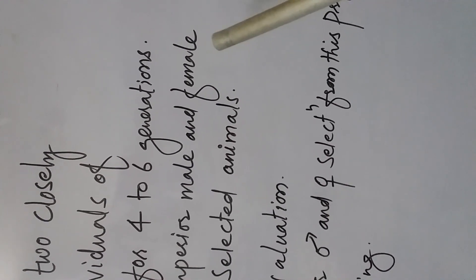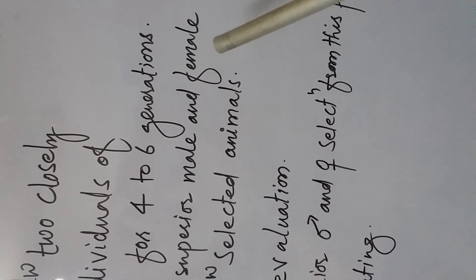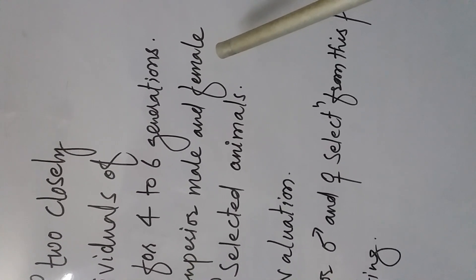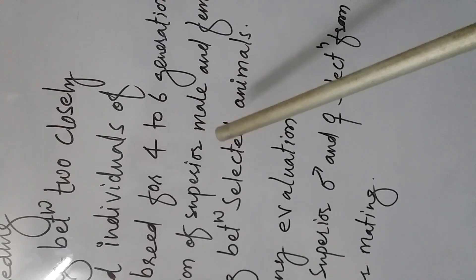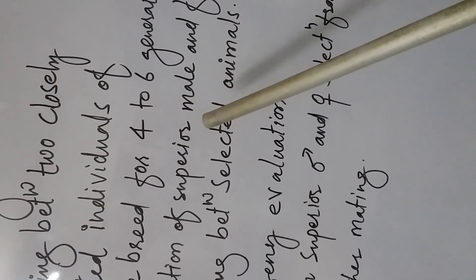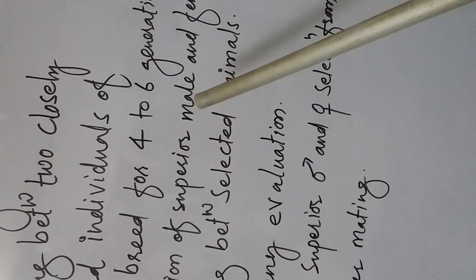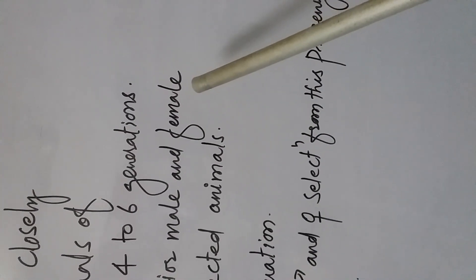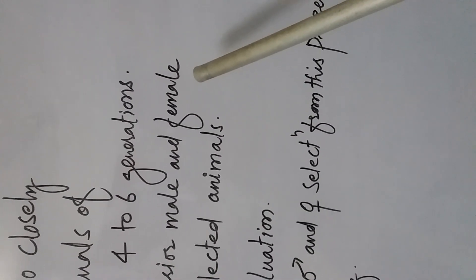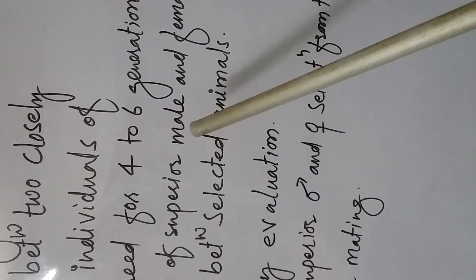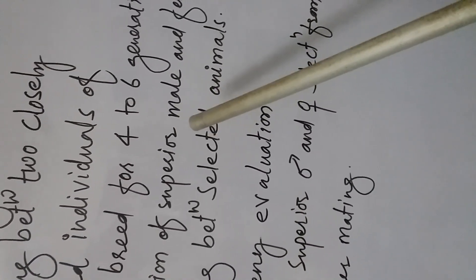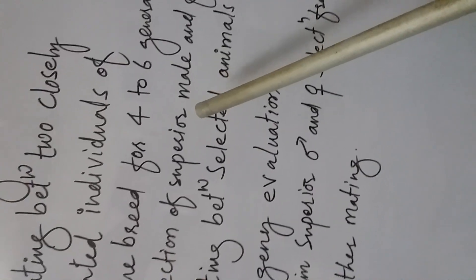A superior female cow is one which can produce more and more milk per lactation, while a superior male — for example, a bull — is one which can produce superior quality progeny as compared to other males. So the superior female produces more milk per lactation, and the superior male produces superior quality progeny.